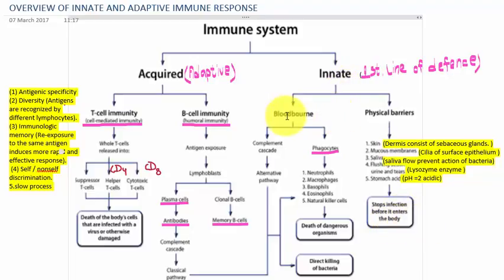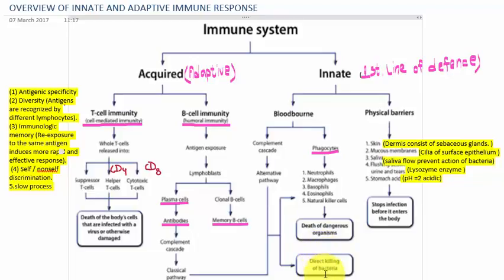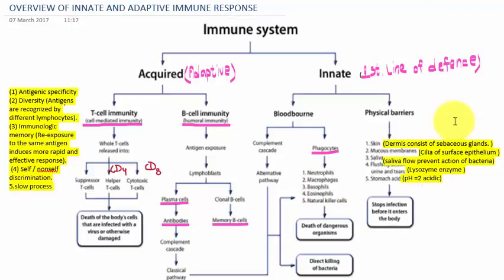The next point covers the cells present in innate immunity: neutrophils, macrophages, basophils, eosinophils, natural killer cells, and mast cells. Neutrophils have a multi-lobed structure and all undergo phagocytosis, leading to the death of dangerous organisms and direct killing of bacteria. In the complement cascade, innate immunity follows the alternate pathway and is connected with adaptive immunity through the classical pathway. We will discuss the alternate and classical pathways in a separate video on the complement system.